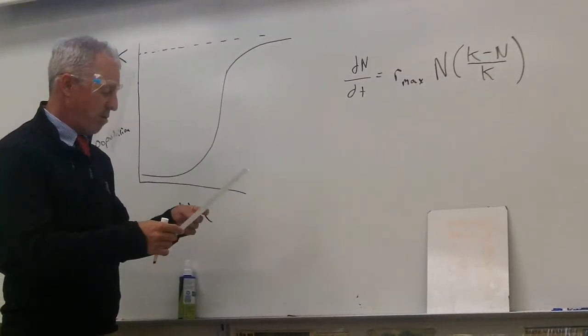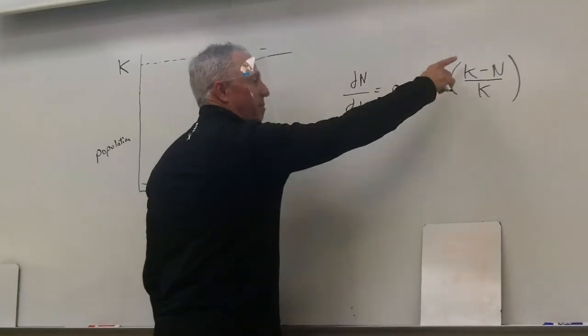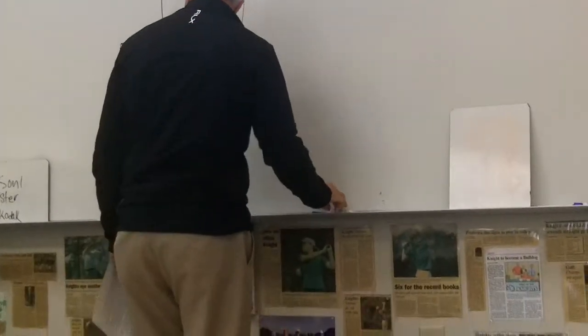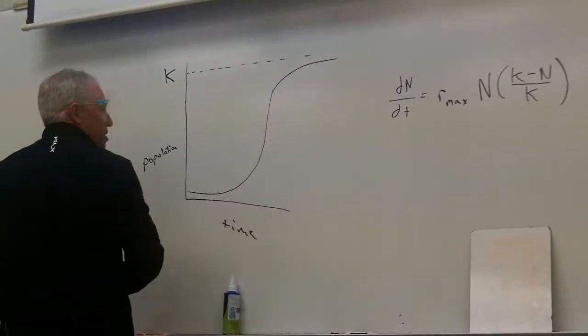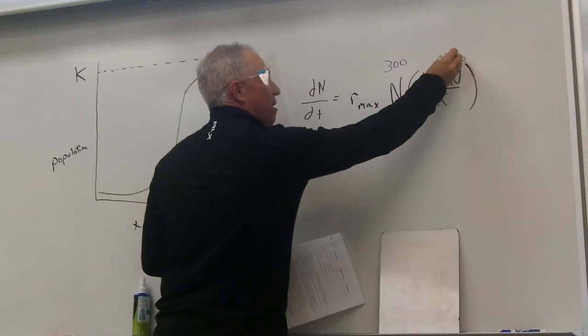So number 8. A population of paramecium aurelia is 300. What does that represent? What's when it's talking about the population? That's N. N is 300. That's N, the number of the population. So we're going to plug 300 in right here. And we're going to plug 300 in right here.